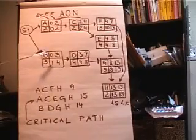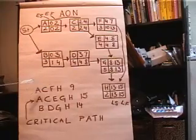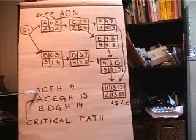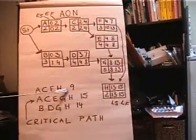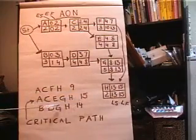So what we'd first like to do is figure out where the critical path is. It turns out that the critical path is the longest path through the network. So if we enumerate all the possible paths: A, C, F, and H add up the times, we get 9. A, C, E, G, and H add up those times, we get 15.